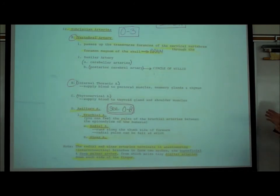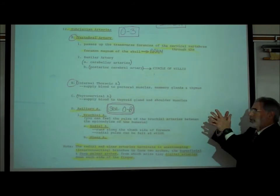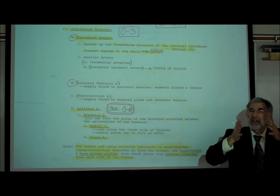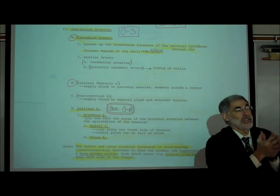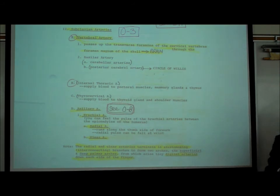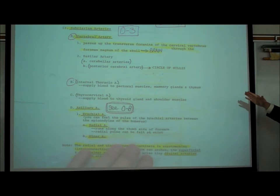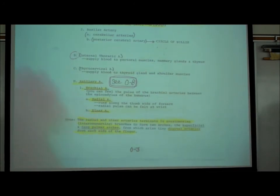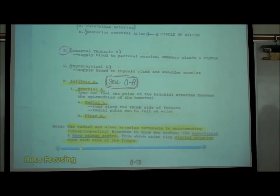The vertebral arteries actually join together when they enter the skull and form what's called the basilar artery. There's a list of other arteries in parentheses that won't be on the test.